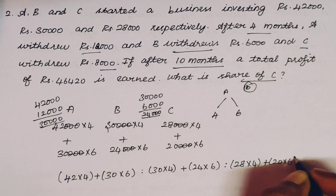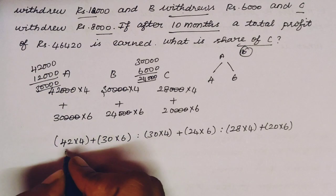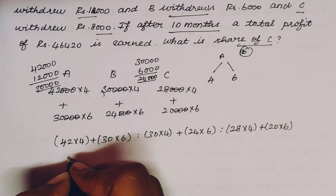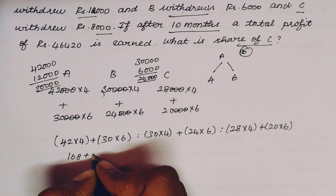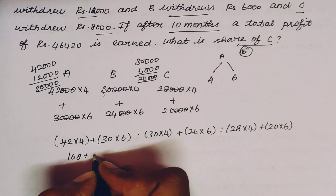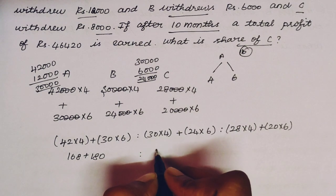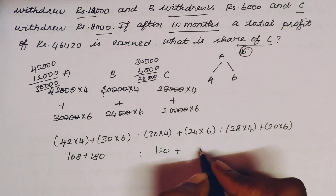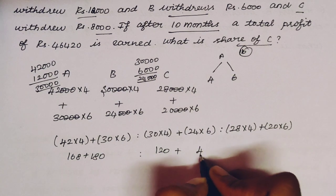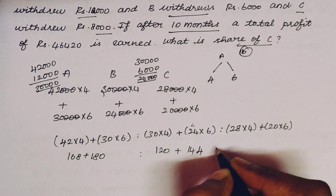Now we multiply and add each member's investment-time products. A = (42 × 4) + (30 × 6) = 168 + 180 = 348. B = (30 × 4) + (24 × 6) = 120 + 144 = 264.